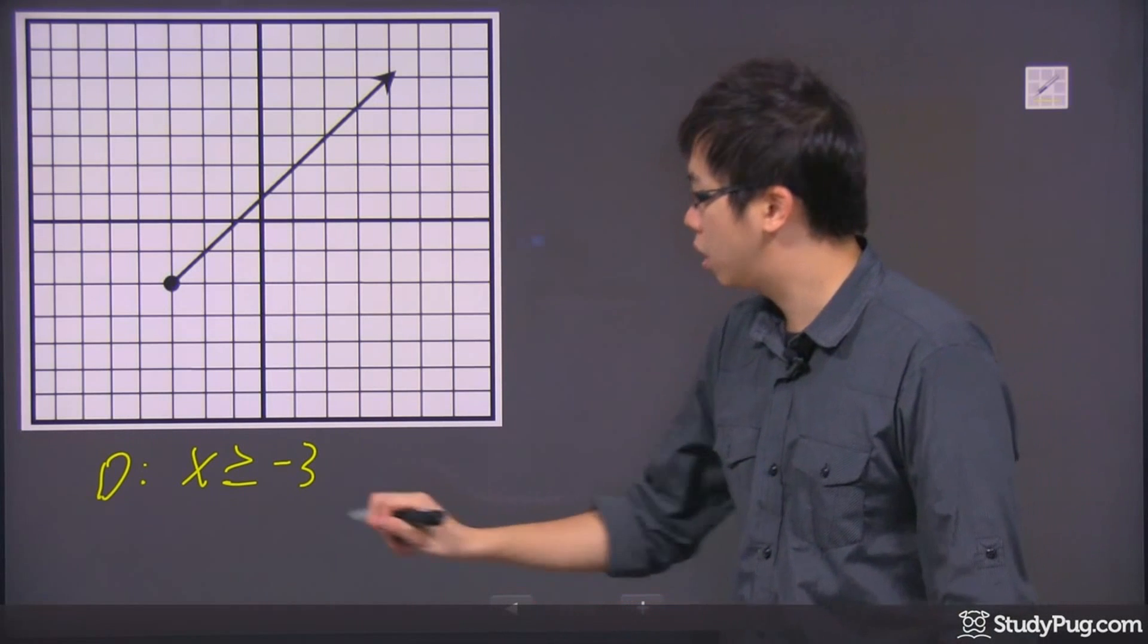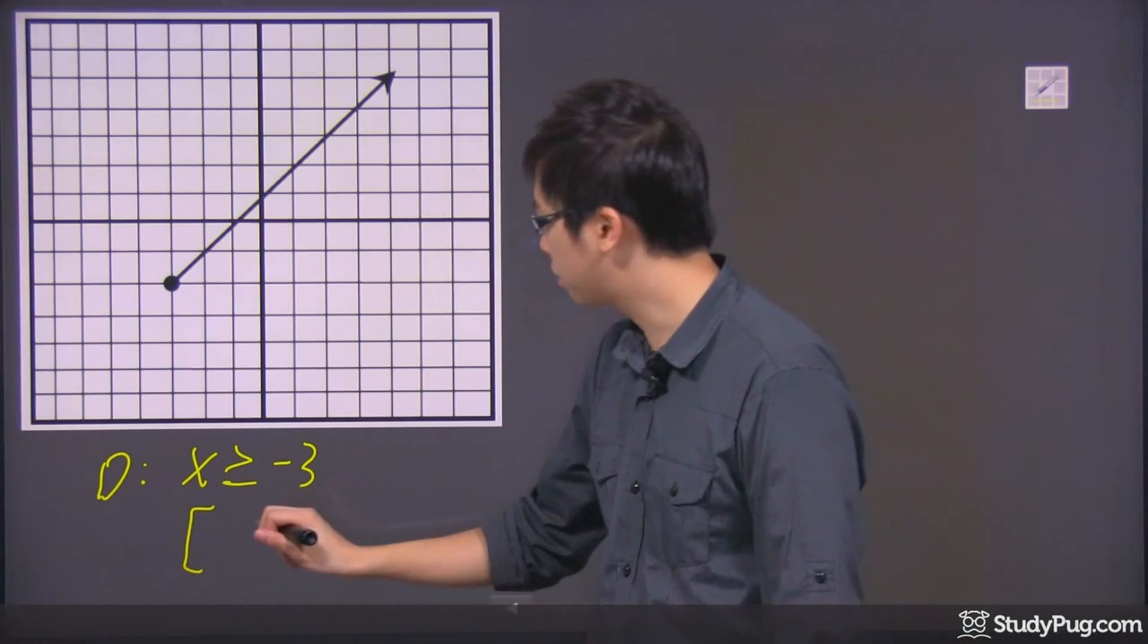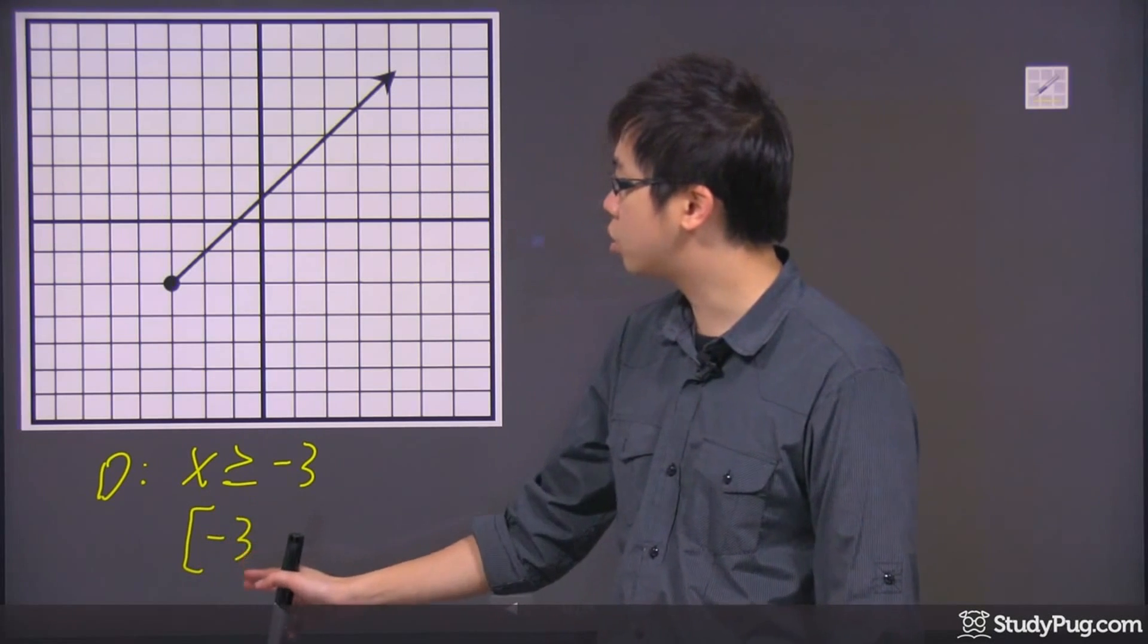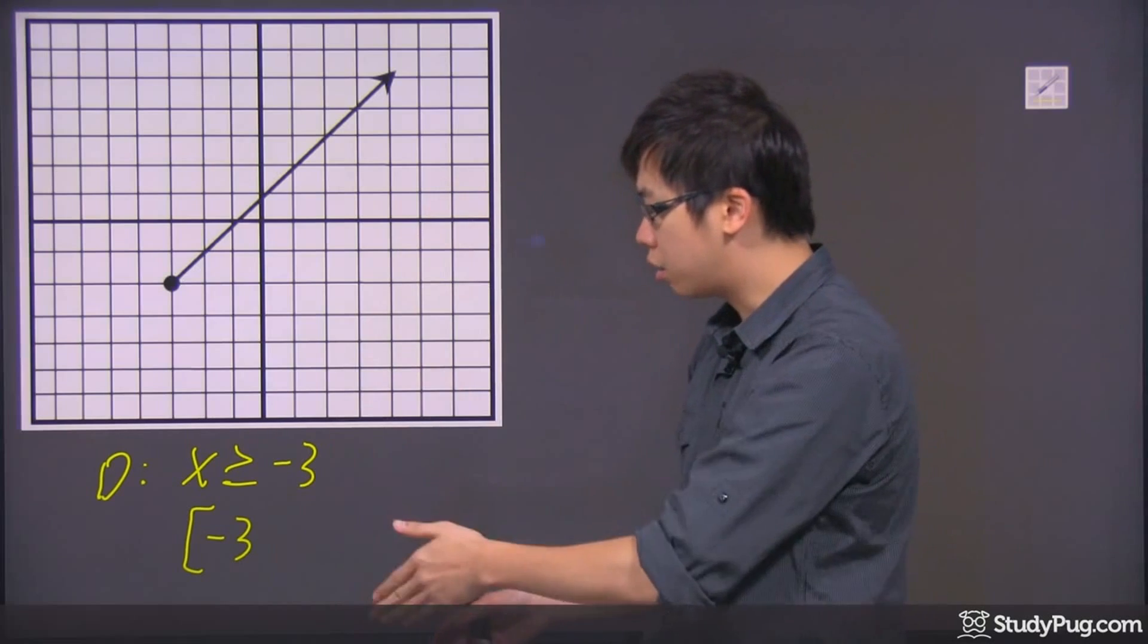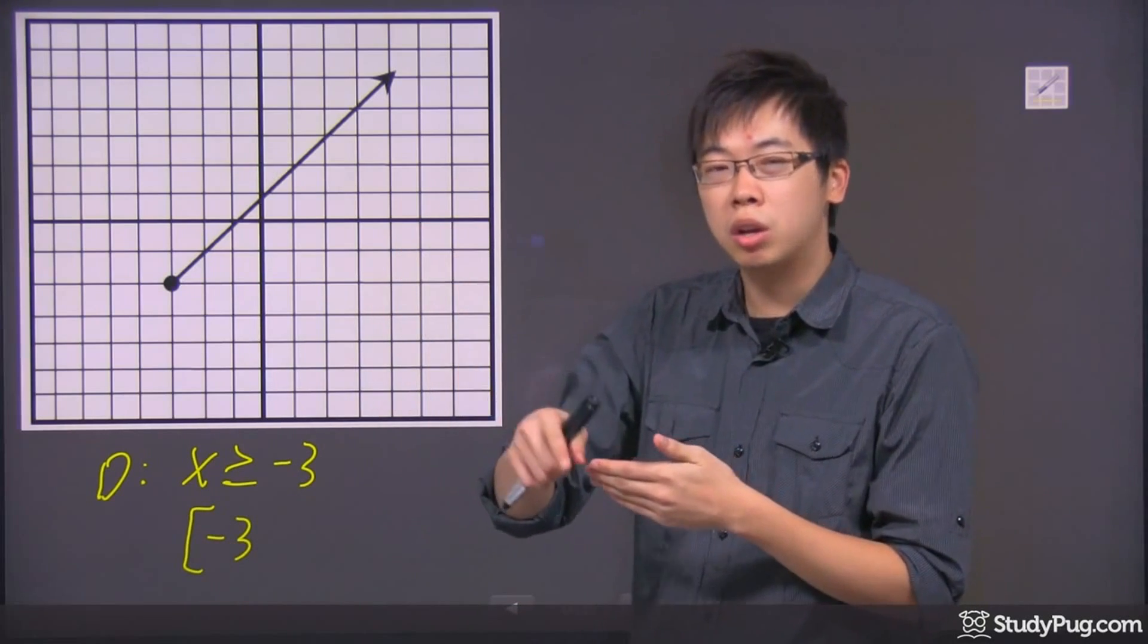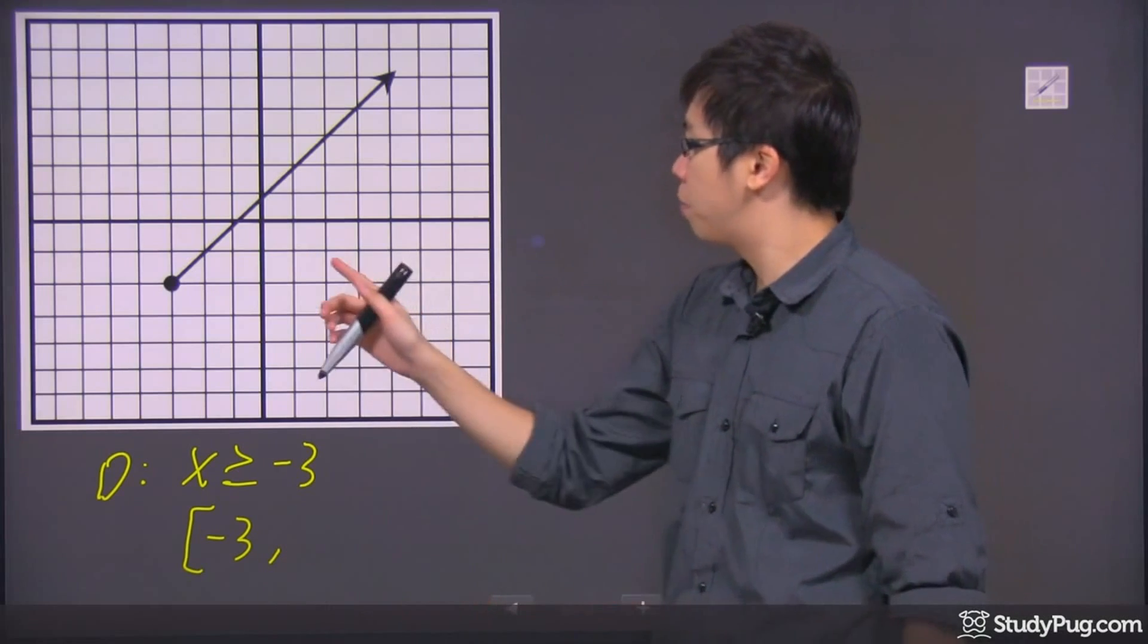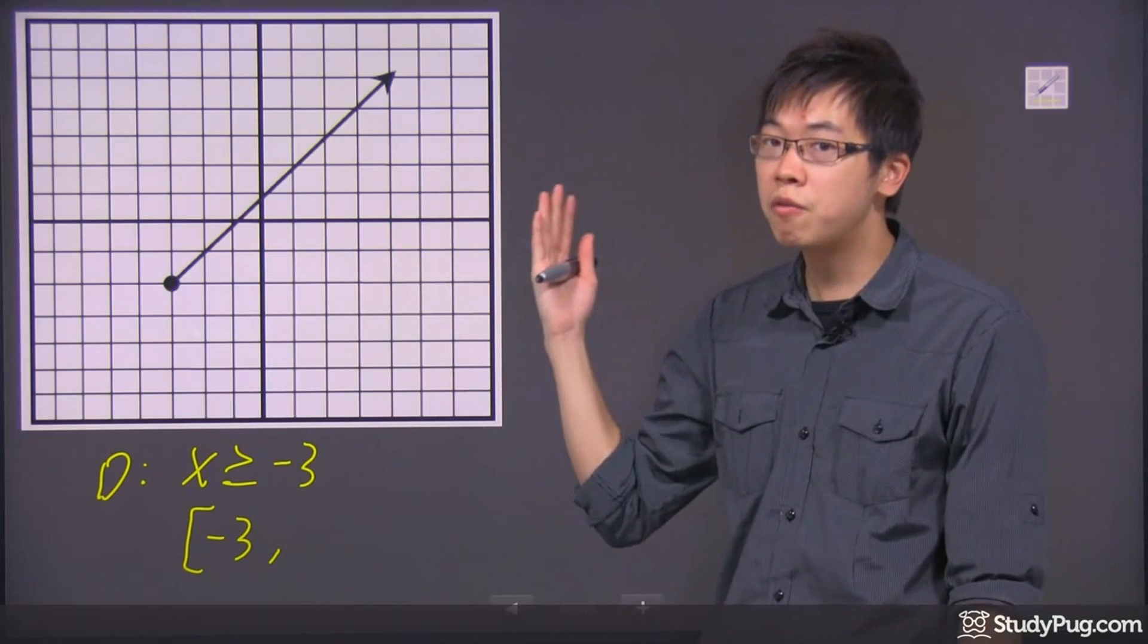You can also do it this way. You can also draw something like a square bracket and you can put down negative three. It means you start at the negative three. You start on the left-hand side, negative three, and it's a square bracket because it also includes the negative three. And do a little comma right here. But the problem is the graph can extend towards the right infinitely, right?